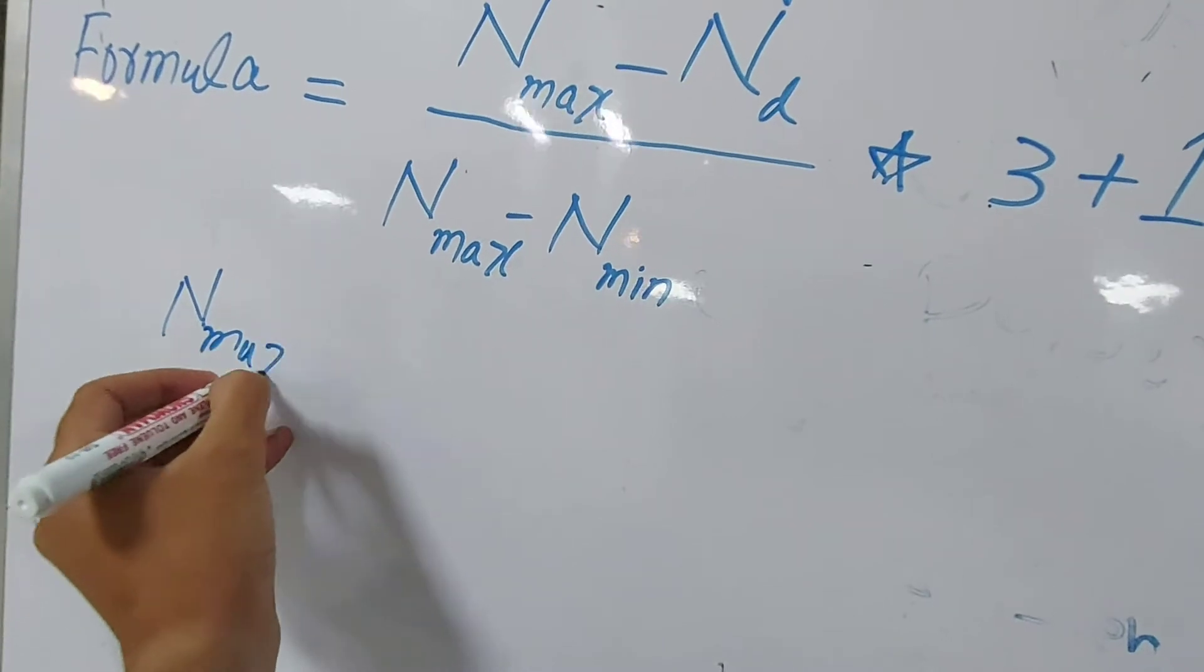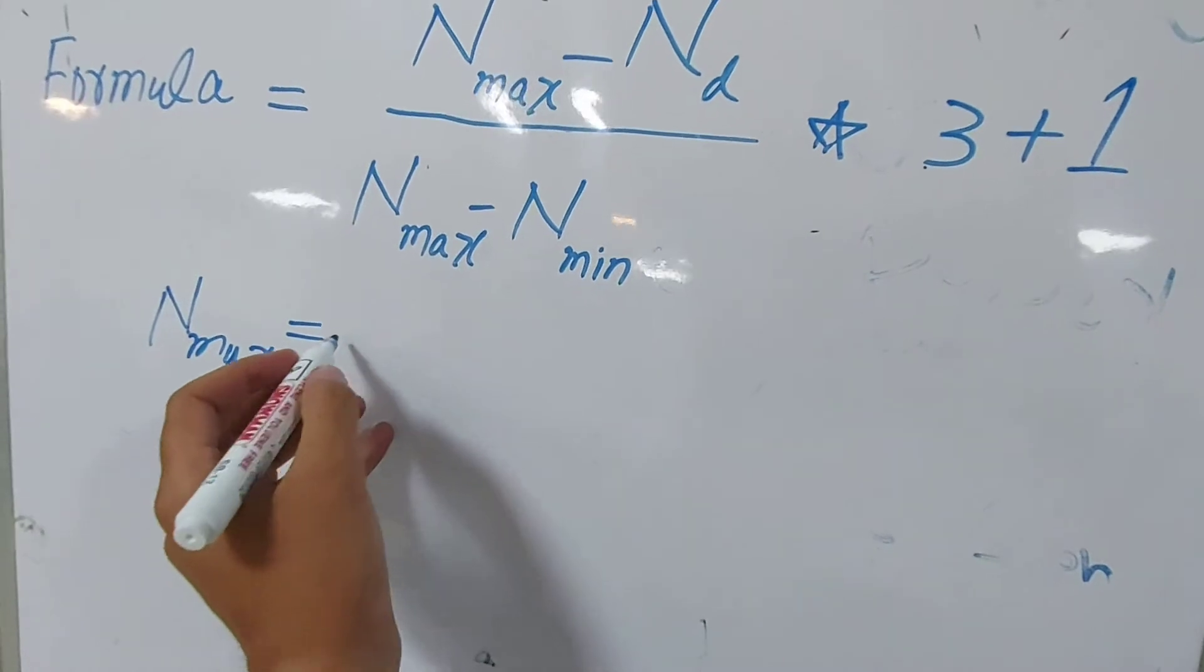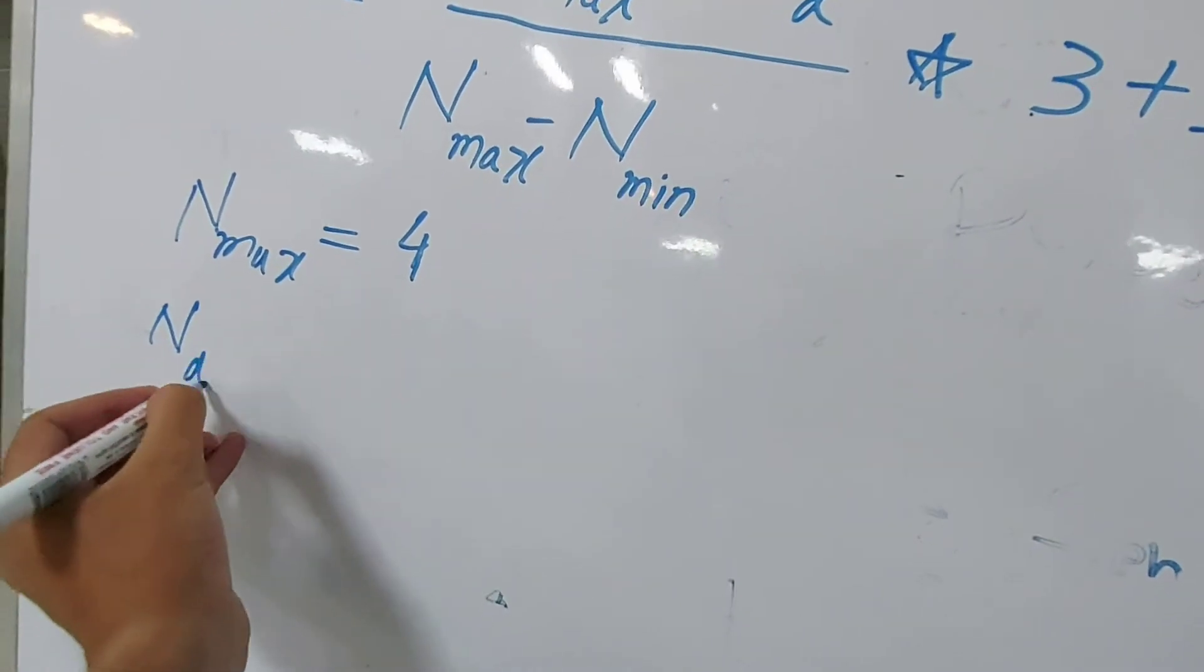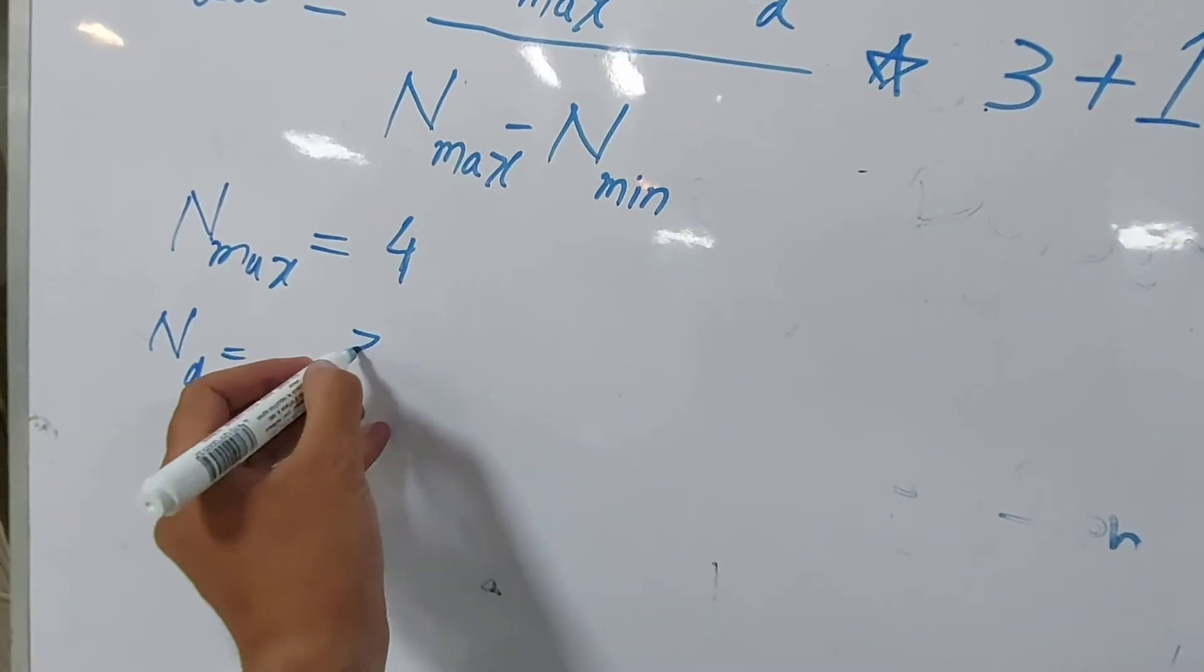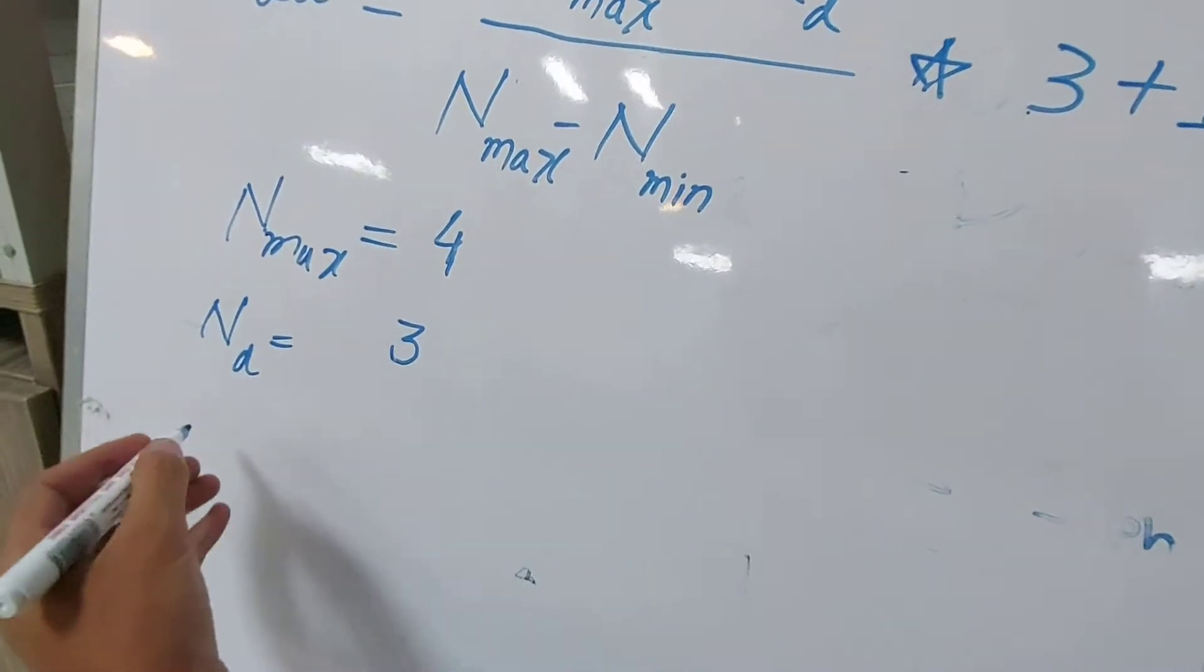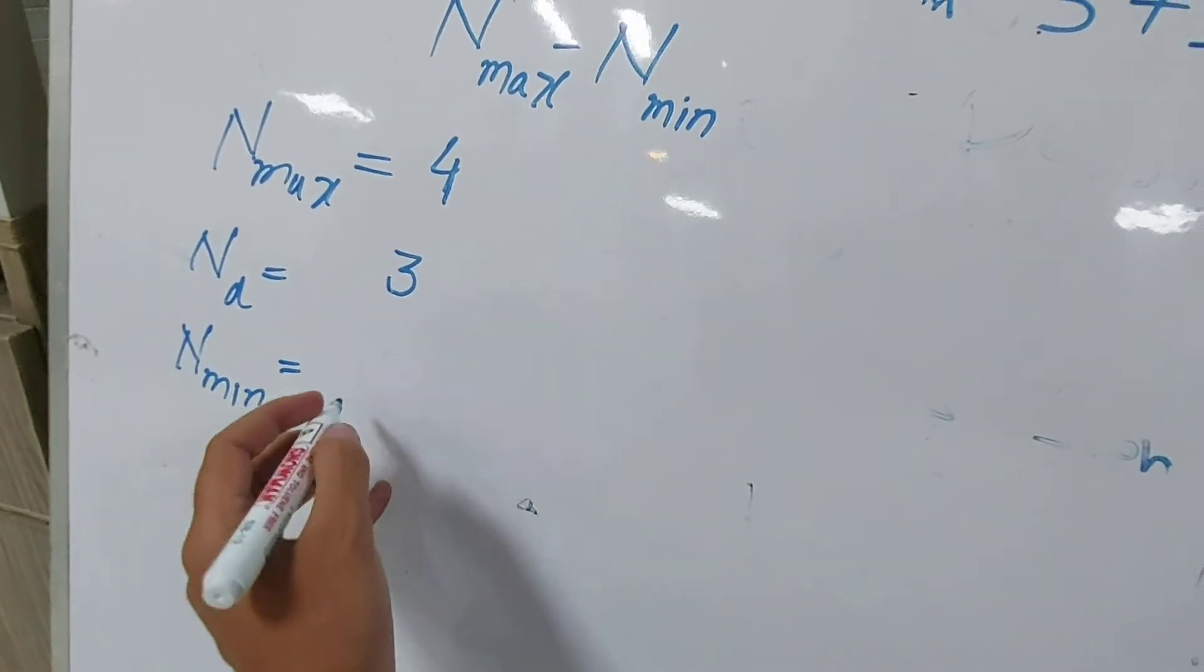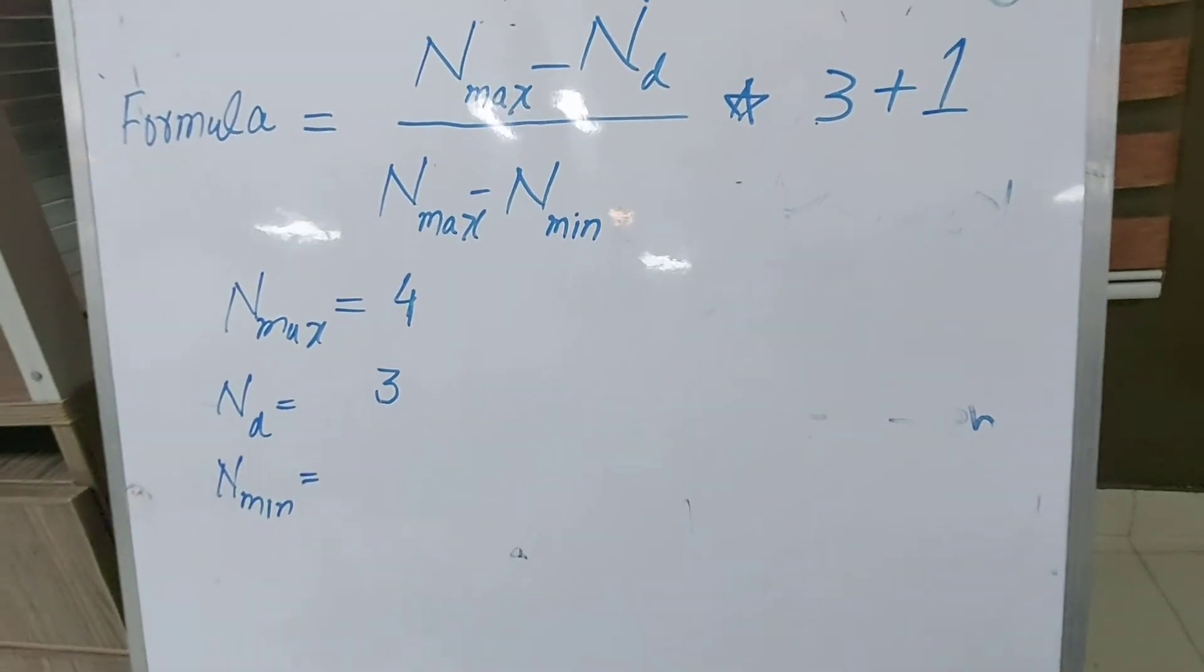Here, Nmax stands for the maximum GPA of your degree. For example, your degree is offering a maximum four CGPA. And Nd is your obtained CGPA. For example, if you have obtained three CGPA in your entire degree. And Nmin is the minimum CGPA which you have to obtain to pass the degree.